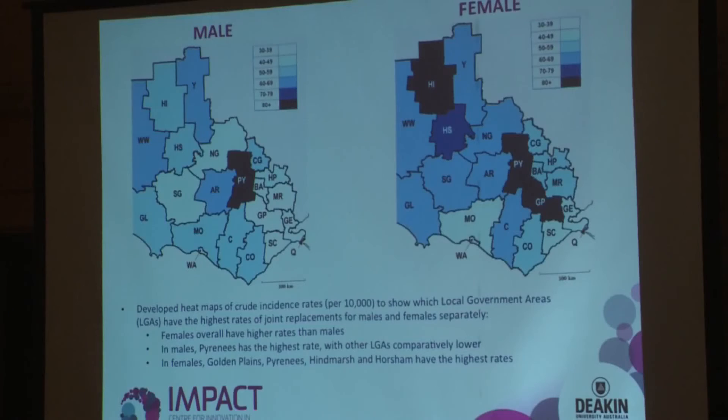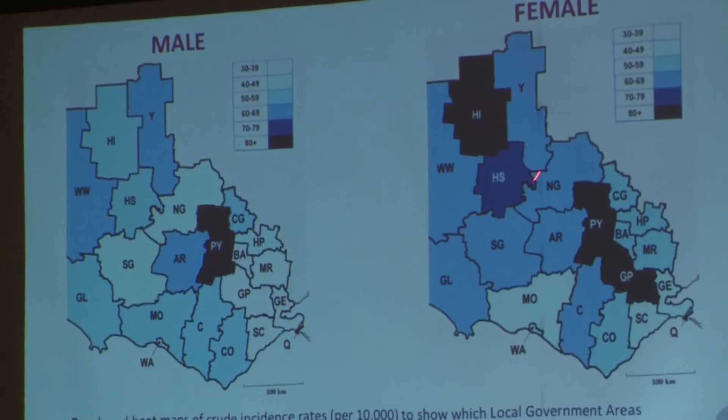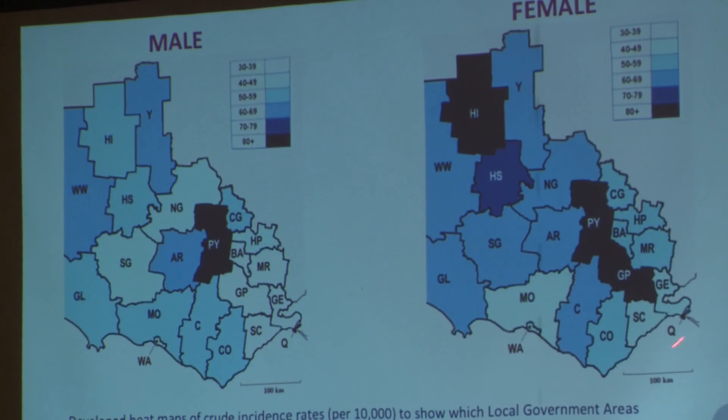For all replacements again, it's the same areas — Pyrenees, Queenscliff, and Yarriambiack. Turning to the differences between men and women in the area: again these are on the same scale, so what you can see is that in general females have higher amounts of joint replacements than men. For men, the highest amounts of joint replacements are again in the Pyrenees area and also in Queenscliff.